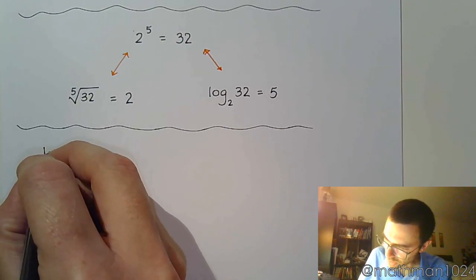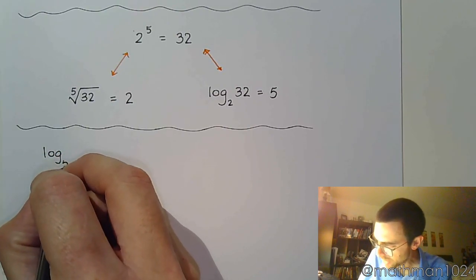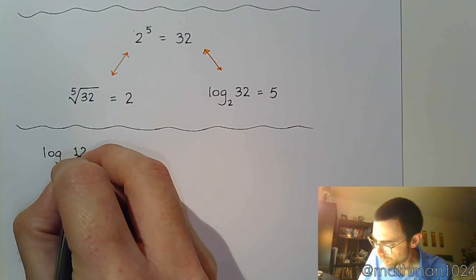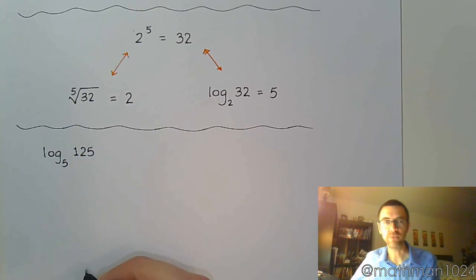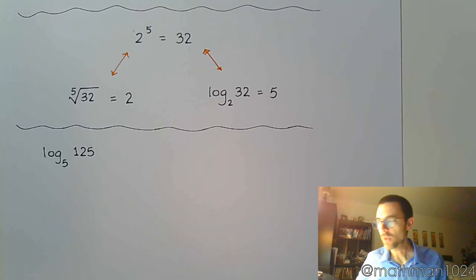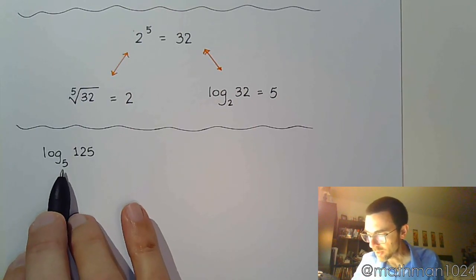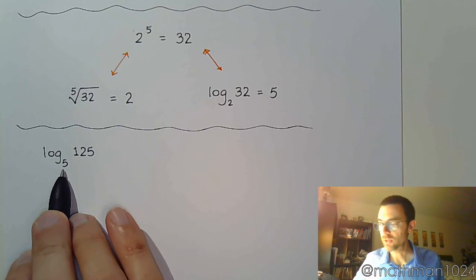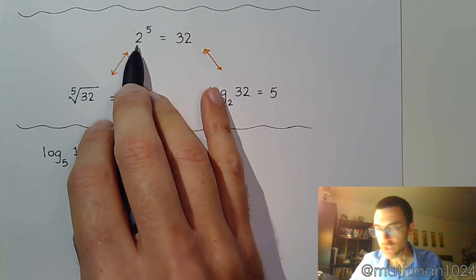So if I ask you this, I say: what is log base 5 of 125? The answer to the log is the power. Now understand what the different parts are. This is your base.